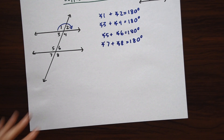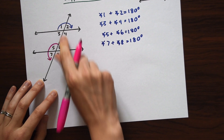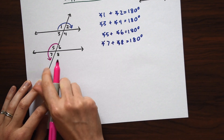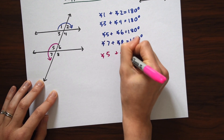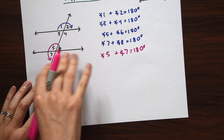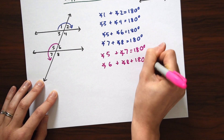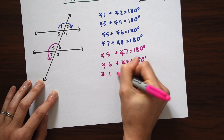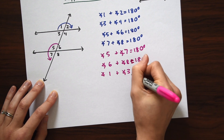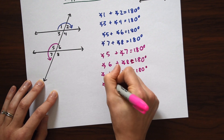There are other supplementary pairs too. Looking along the transversal, angle 5 plus angle 7 also equals 180 degrees, and on the other side angle 6 plus angle 8 equals 180 degrees. Up here, angle 1 plus angle 3 equals 180 degrees, and angles 2 and 4 also equal 180 degrees.